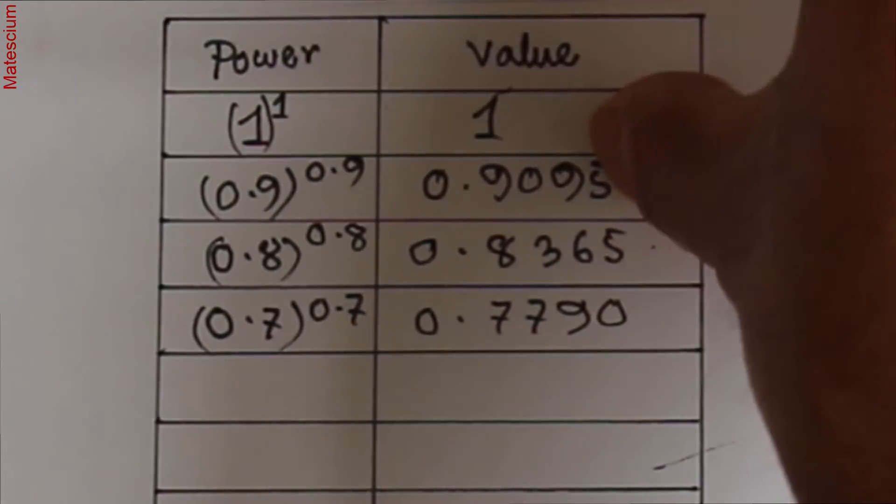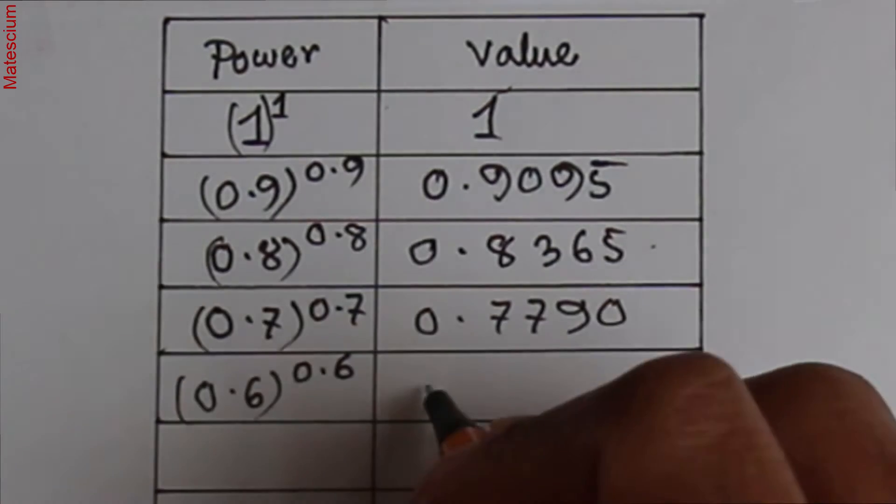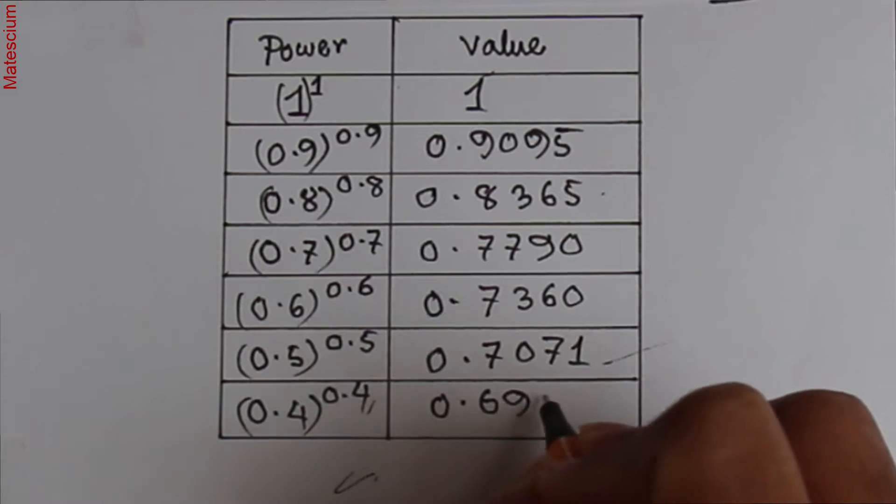Interesting part is coming. Don't go. 0.6 to the power 0.6 is 0.6931.